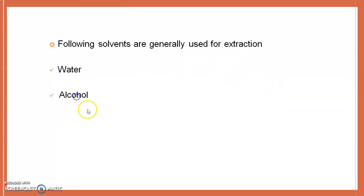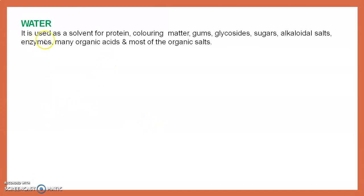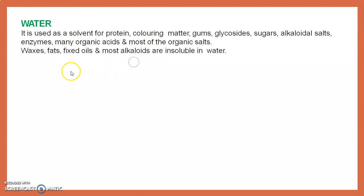The following solvents are generally used for extraction. Generally water and alcohol are the most commonly used solvents. Water is used as a solvent for proteins, coloring matter, gums, glycosides, sugars, alkaloidal salts, enzymes, many organic acids, and most organic salts. However, waxes, fats, fixed oils, and most alkaloids are insoluble in water, so water is not used as a solvent for these.